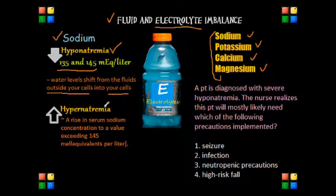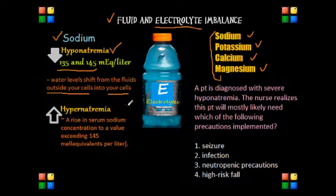Going back to our patient with hyponatremia — I also want to mention that too much total body water, basically if a patient drinks excessive amounts of water, can also be a cause for hyponatremia because it dilutes the amount of sodium in the body. This can be seen in patients with heart failure, since it correlates with kidney failure.